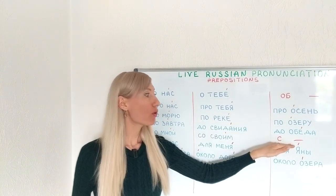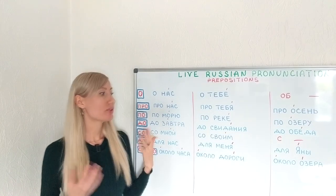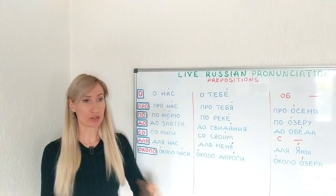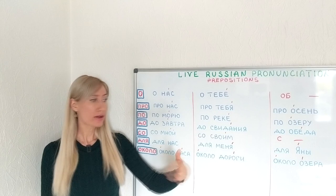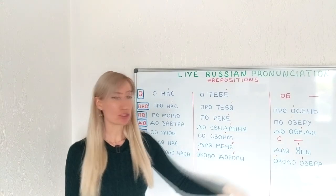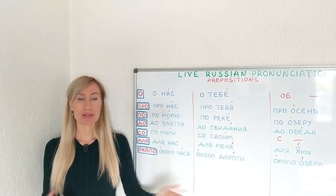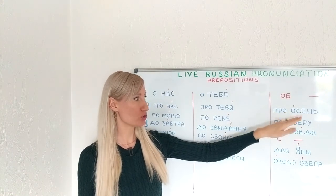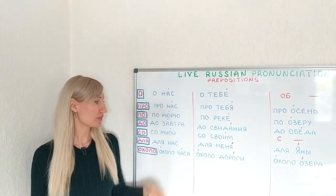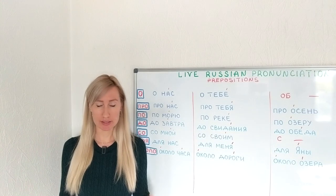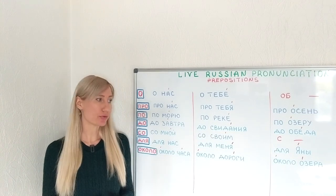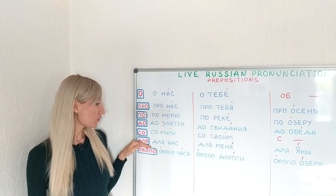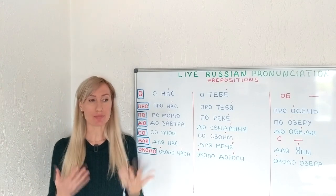In this case we also don't have an example when a word starts with О in СО, because we would use the preposition С, not СО — for example С ОБЕДОМ, С ОСЕНЬЮ, С ОЗЕРОМ. С and СО are used with the instrumental case.